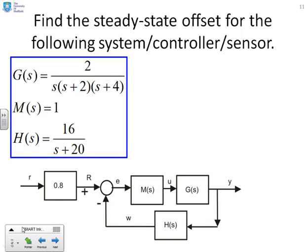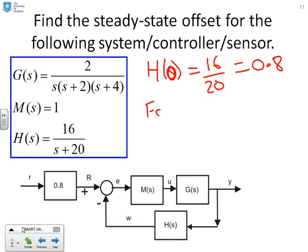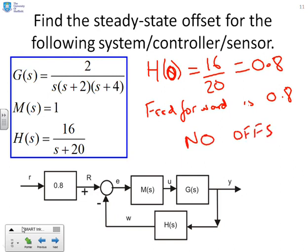Here's an example: find the steady state offset for the following system controller sensor pair. We need to look at H of S and work out H of 0. H of 0 equals 16 over 20, which equals 0.8. Then look at the feed forward, which is also 0.8. Because those two match, you will have no offset. If the gain of the feed forward matches the steady state gain of the sensor, you have no offset — assuming, of course, you've got an integrator in the loop, which you'll notice is present here.